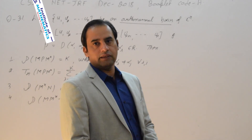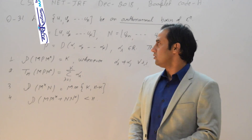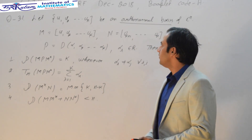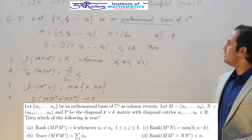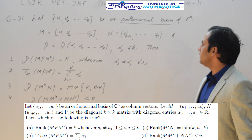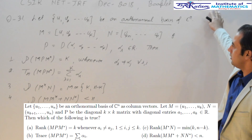In this lecture we are going to discuss question number 31 from NatGRF December 2018, and the booklet code is A.